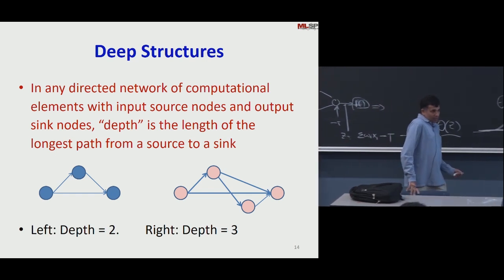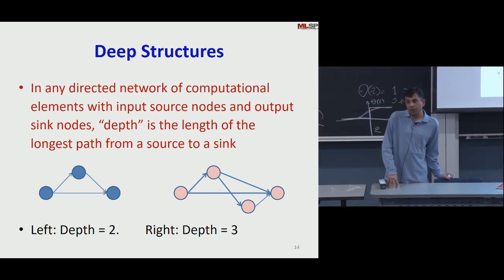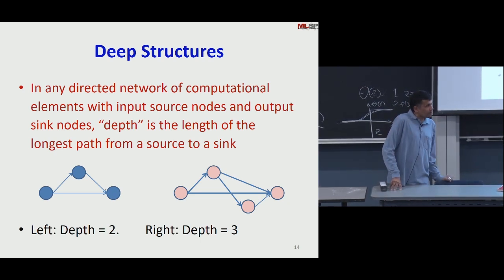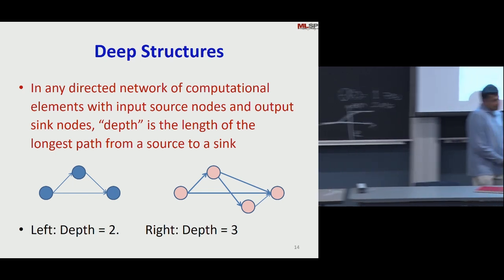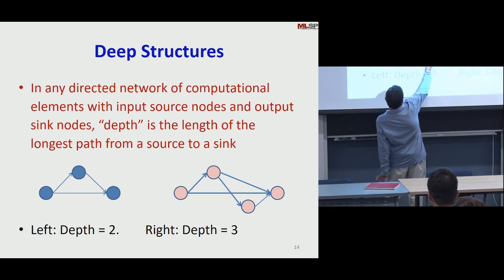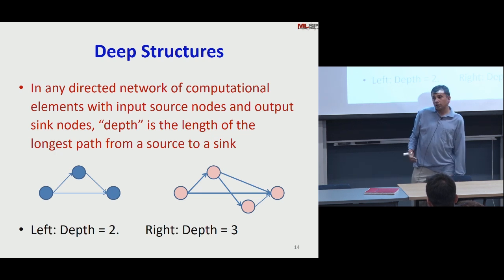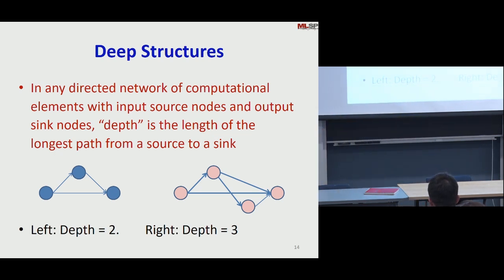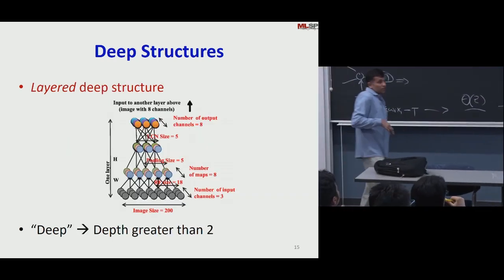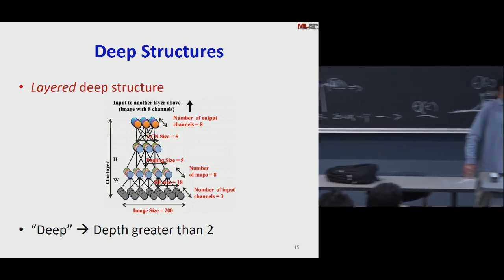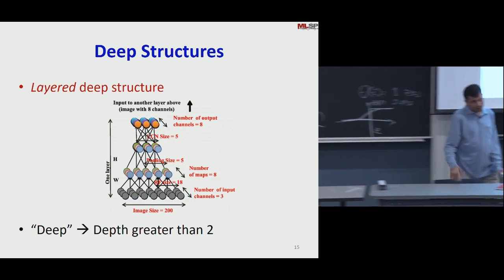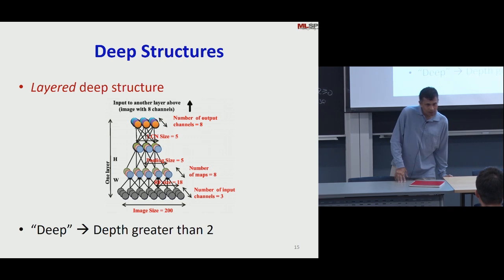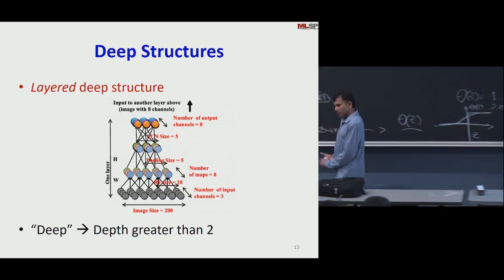If I have a directed graph, it has sources and sinks. The depth of the graph to the left is two, because although I have a path of length one from source to sink, I also have a path of length two — the greater of the two is two. The depth of the graph to the right is three. So when I speak of a neural network — typically a multi-layer perceptron — the graph has a depth. If the depth is greater than or equal to three, we call it a deep network. There's a formal definition: a deep network has at least three layers, or depth three or more.